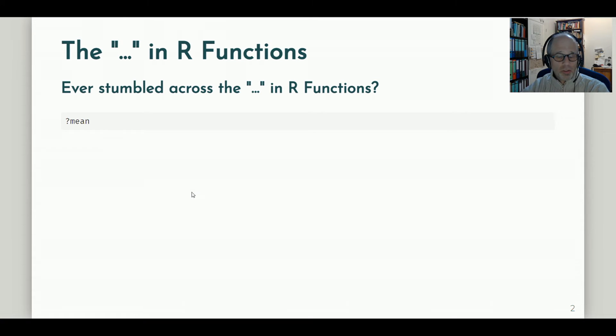An example is the mean function. Let's check out the help file, the documentation for the mean function, and we see that the mean function makes use of these three dots. Mean is a so-called generic function. That means there are different kinds of mean functions for different types of objects. For example, there's a dedicated mean function for date objects.